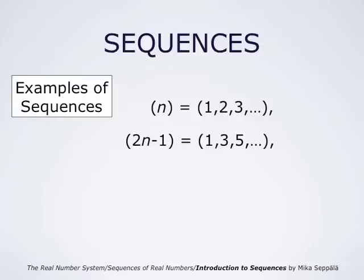The sequence 2n-1 consists of odd numbers. If n equals 1, 2n-1 is 1. If n equals 2, 2n-1 is 3, and so forth. So the sequence 2n-1 is 1, 3, 5, 7, 9, and so forth.